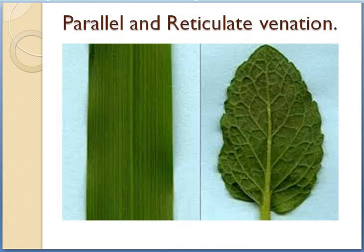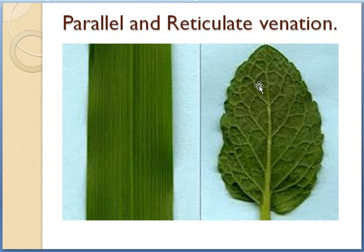If I show you this leaf, for example, you can see small fine lines running throughout the lamina. These fine lines have no definite shape and sizes. They are running all over the lamina. These lines are known as veins. And in this picture also, you can see the veins are running in a straight line.